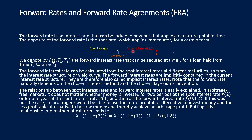Accordingly, the forward rate agreed now in time T is for a loan held from T1 to T2. We denote this forward rate F012 if it is a forward rate agreed now, starting in one year and ending in two years. The forward rate can be calculated from the spot interest rate at different maturities — from the interest rate structure or yield curve. The forward interest rates are implicitly contained in the current interest rate structure, and are therefore called implicit interest rates.